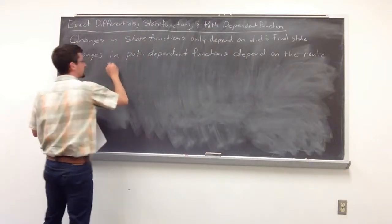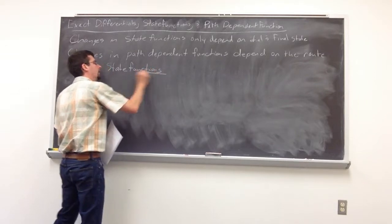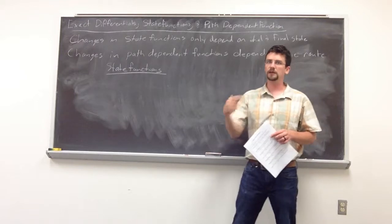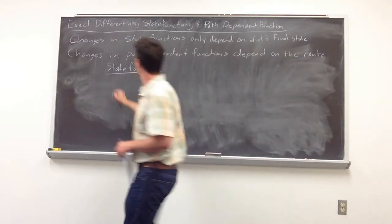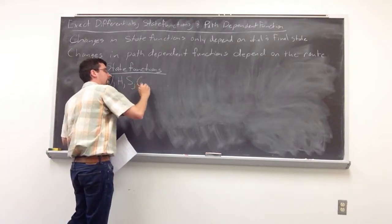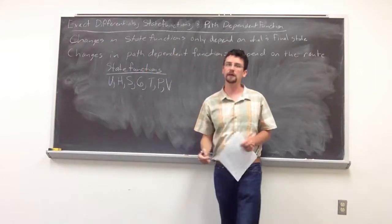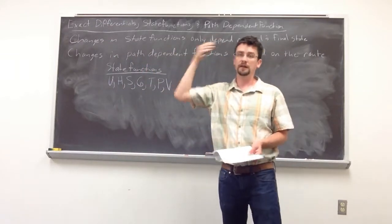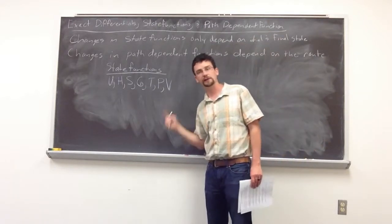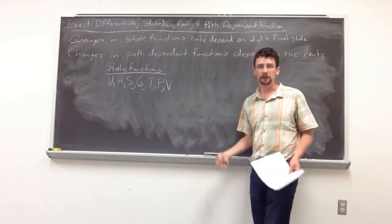Some state functions that we see commonly in thermodynamics — things like internal energy, enthalpy, entropy, Gibbs free energy, temperature, pressure, and volume — are all examples of state functions where we consider only the initial and the final state. For example, with pressure-volume work, we only consider the initial volume and the final volume to calculate the work being done.